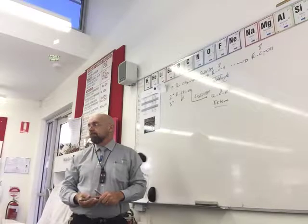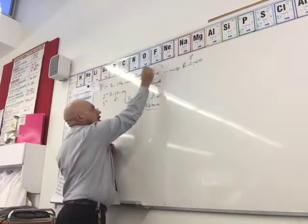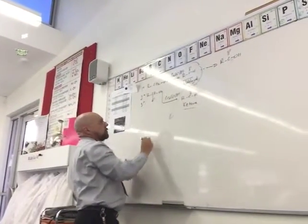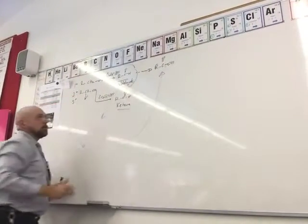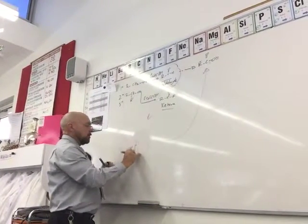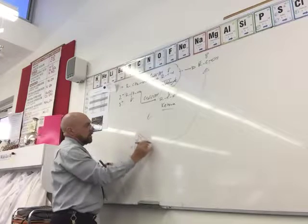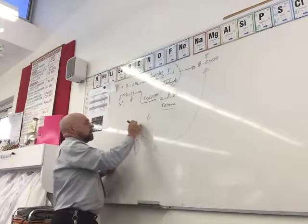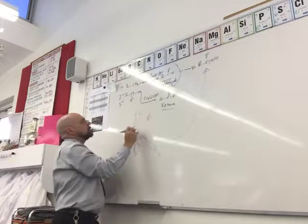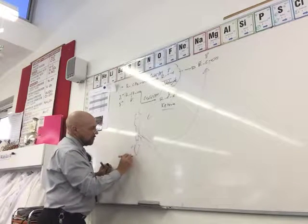Does anybody recall how we stop the reaction at the aldehyde stage? That was very critical — if you don't, you end up with a carboxylic acid as the product. In order to stop at the aldehyde stage, we need to collect the aldehyde as it's formed. We'll come back to this in a minute because we'll also do carboxylic acids.